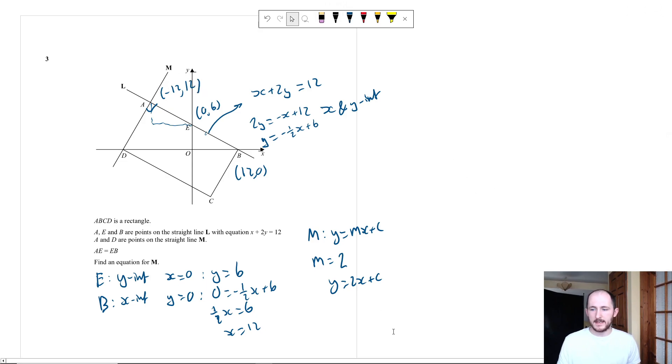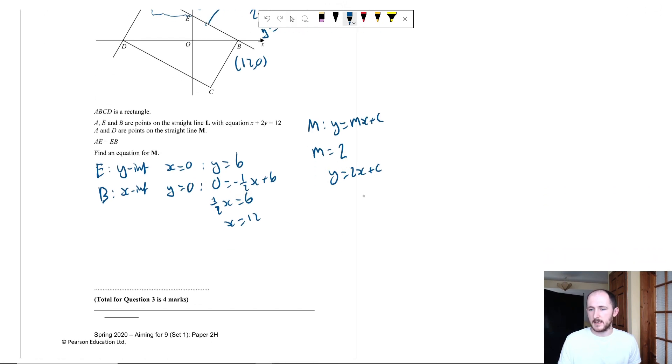So all I need to do now is sub that into this equation to work out what C is. So when X is equal to minus 12, Y is equal to plus 12. So sub that in, I get 12 is equal to 2 times minus 12 plus C. That gives me 12 is equal to minus 24 plus C, which means C is equal to 36. So my final equation for M is Y is equal to 2X plus 36.